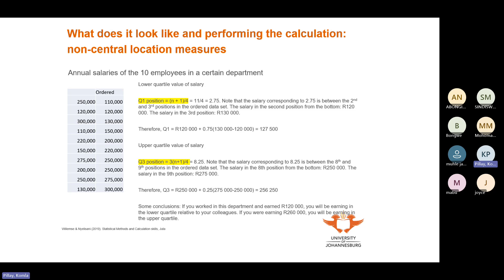Let's look at our annual salaries dataset. We have a table with salaries such as 250,000, 120,000, 300,000, and so forth. We then ordered this from lowest to highest: 110,000, then 120,000, then 130,000, and so on. This is just your original data placed in order from small to big.